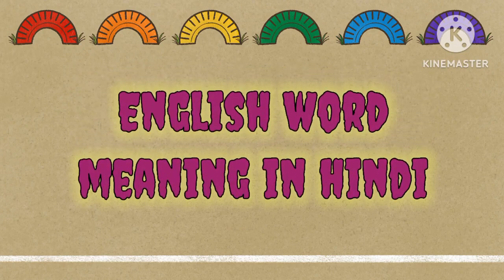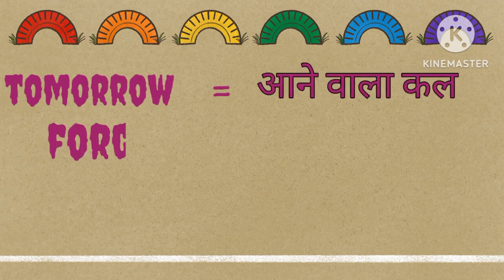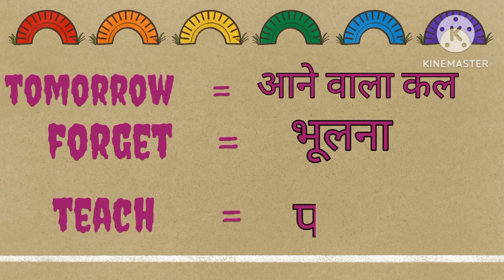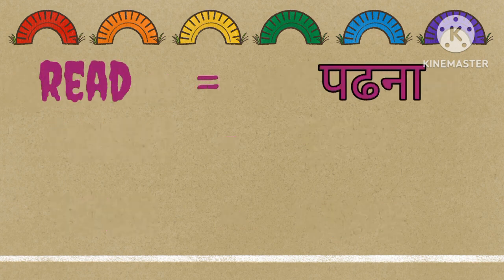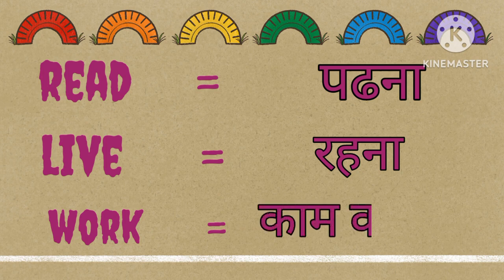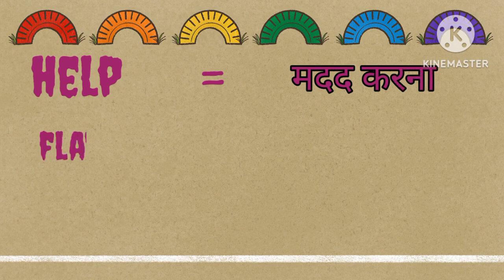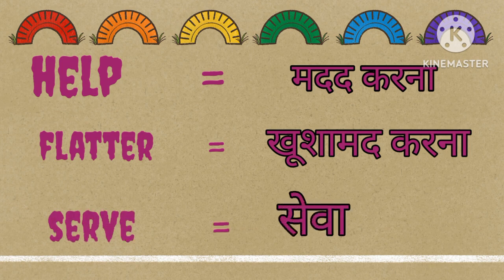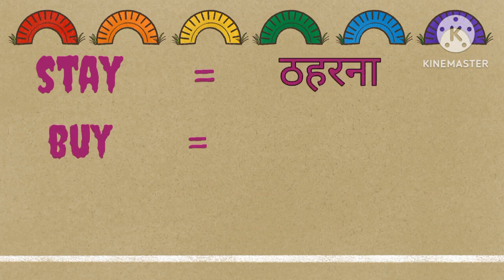English word meaning in Hindi. Tomorrow: Aanevala kal. Forget: Bholna. Teach: Padhana. Read: Padhana. Life: Rehna. Work: Kaam karna. Help: Mudat karna. Platter: Khushamat karna. Serve: Seva karna. Stay: Thaharna. Buy: Khariduna.